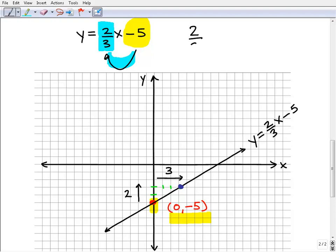So the slope is 2 over 3. It's the rise over the run. And the rise, if the slope is positive, will go up. The run is always to the right. So in this case the slope is telling us to go up 2 and then go to the right 3.